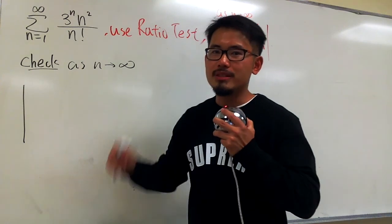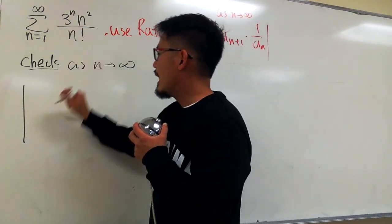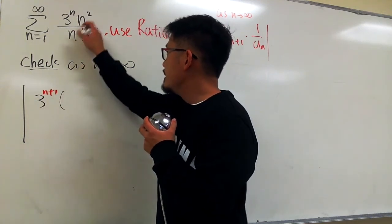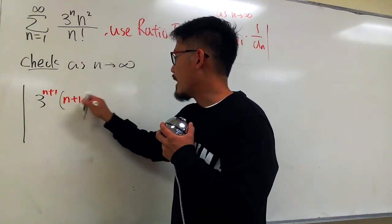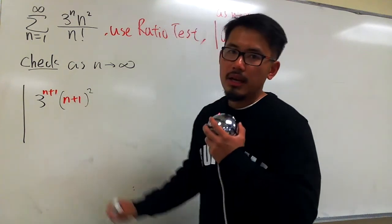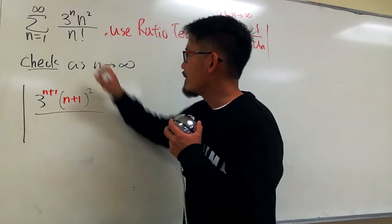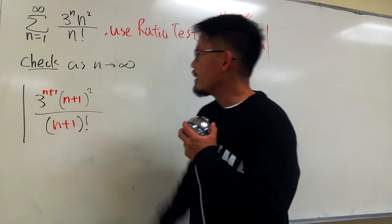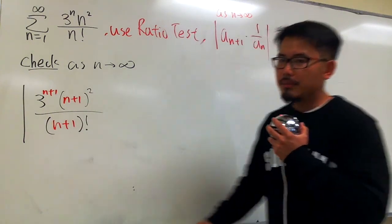We will have 3 to the (n+1) power times n squared, which becomes (n+1), and then square. And then on the denominator, we have (n+1) factorial. That's a_(n+1).